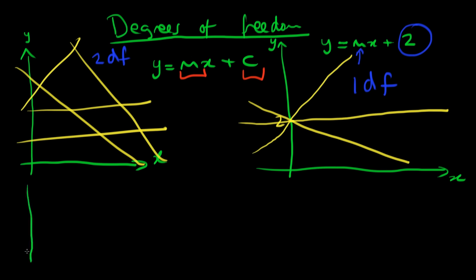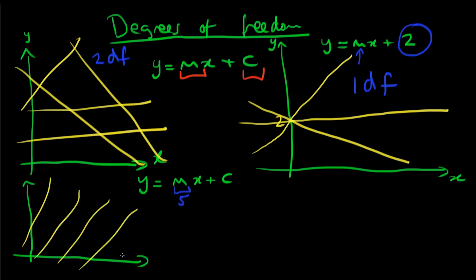Similarly, if I was to actually vary the y-intercept and hold m constant, so maybe holding m at let's say 5, then that will define a whole family of curves which are all parallel to one another and have different y-intercepts. Again here we only have one degree of freedom.